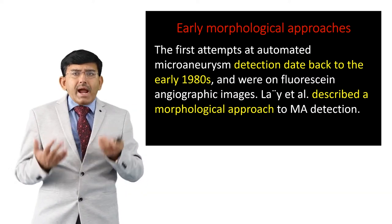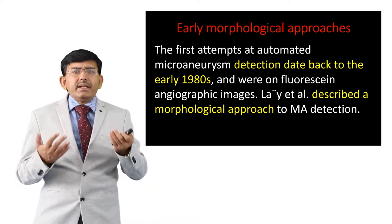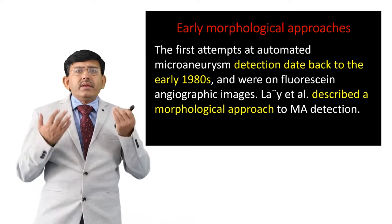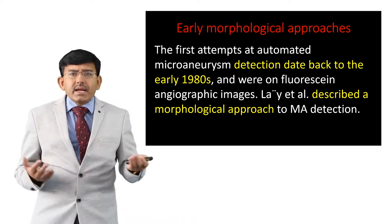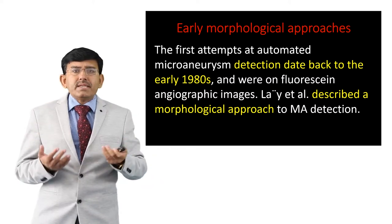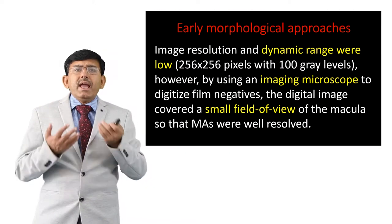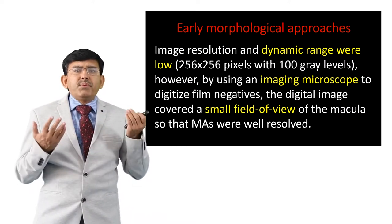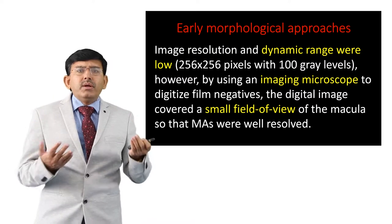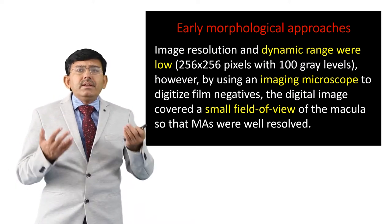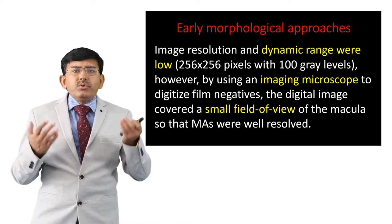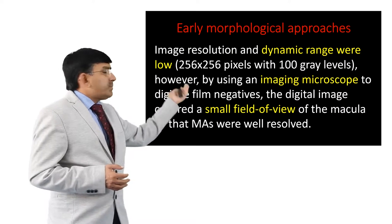The first attempt at automated microaneurism detection dates back to the early 1980s on fluorescent angiographic images. Lay and his team described a morphological approach used for the detection of microaneurisms. Image resolution and dynamic range were low — 256 by 256 pixels with 100 gray levels. However, by using an imaging microscope to digitize film negatives, the digital image covered a small field of view of the macula so that microaneurisms were well resolved.